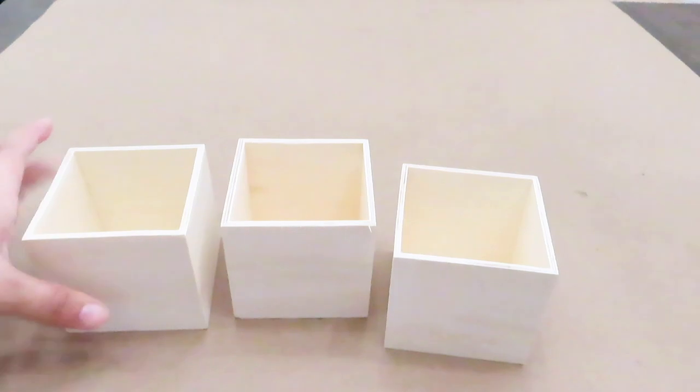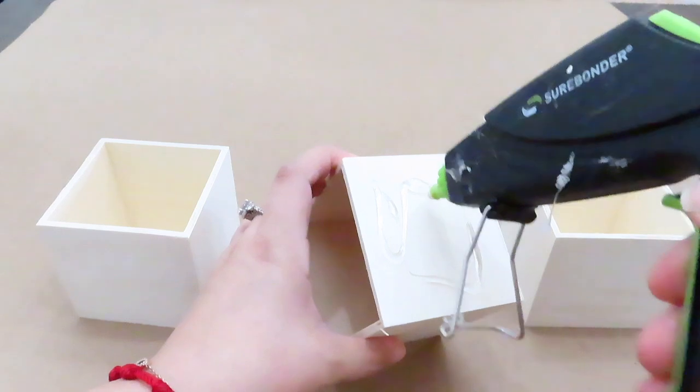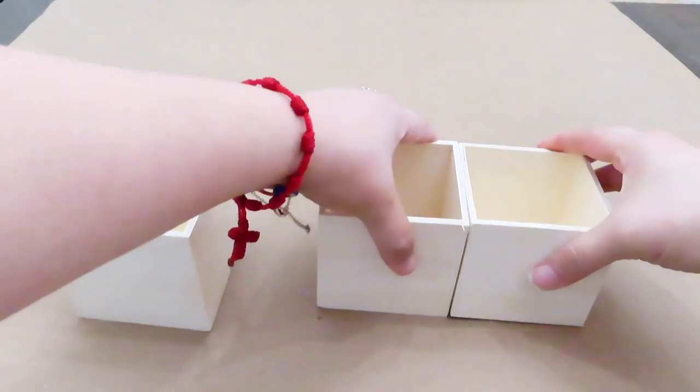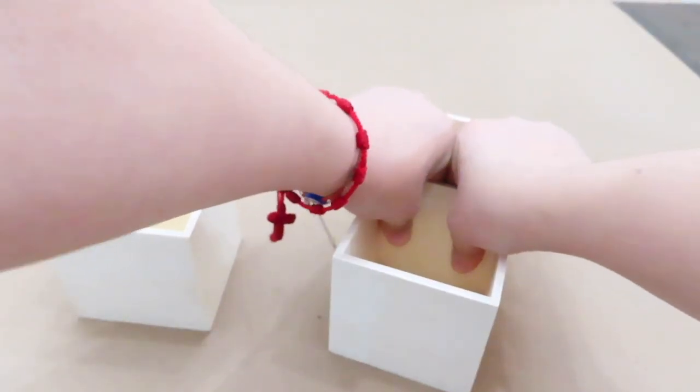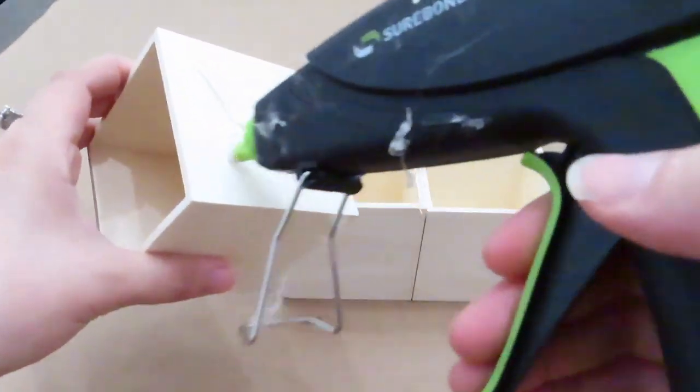For the first DIY, I'm just removing the little drawers from these wooden boxes that I found at the Dollar Tree, and I'm going to be saving them for the next DIY. To put them together, I am just using some hot glue.